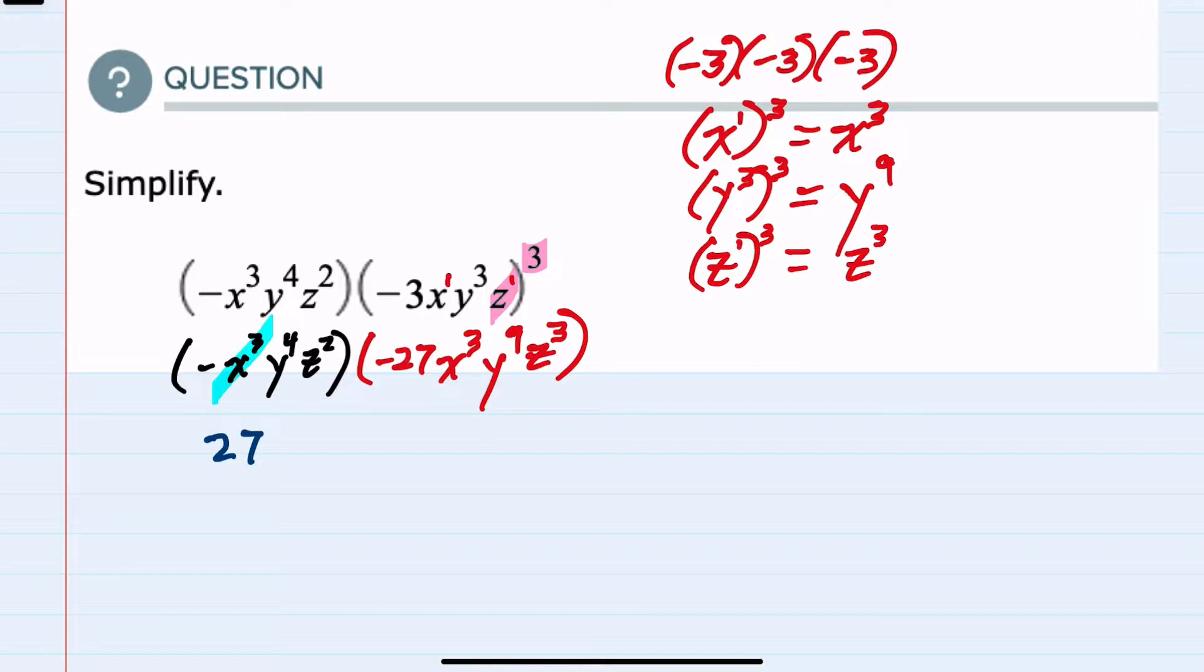Then we have these common x's on the left. There is an x to the third. On the right, there is an x to the third. And when we're multiplying variables with exponents, since the variables are the same, we can combine by adding the exponents. So x to the sixth.